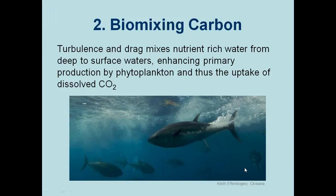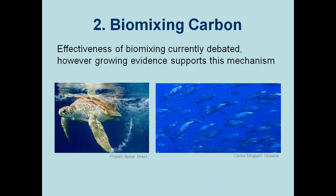The second fish carbon mechanism is biomixing. As marine vertebrates move through the water column, their movement creates turbulence and drag, which can bring nutrients from depth to surface waters. In the open ocean, where photosynthesis is otherwise nutrient-limited, the action of biomixing can enhance the uptake of atmospheric carbon dioxide into the ocean. While the occurrence and significance of biomixing are currently debated, there is growing evidence supporting the validity of this mechanism, even by the smallest marine organisms.